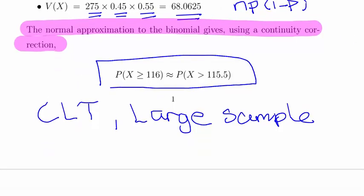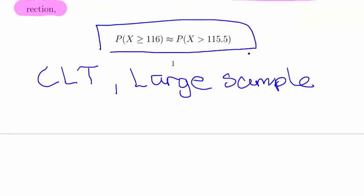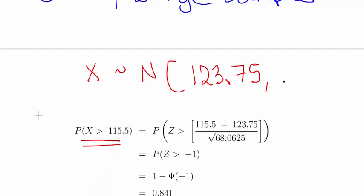I'm going to sort of skip past that and try and finish this video quickly. Essentially what we have there, we're going to set it up with, specify X as a normal distribution with mean 123.75 and then a standard deviation of the square root of 68.0625.